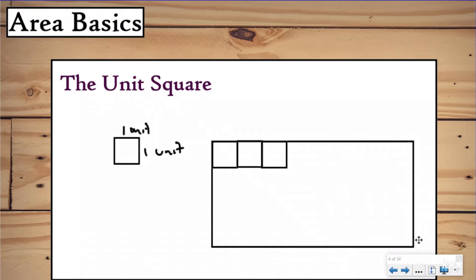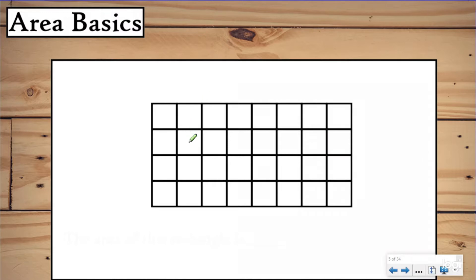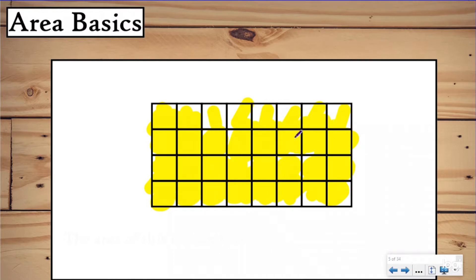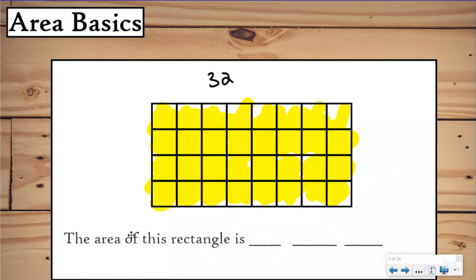Let's fast forward to when I've covered the entire rectangle already. Here we have the same rectangle covered with our unit squares, and we're trying to find the area. We're going to count the unit squares — count them in a line, and shade them in as you count so you don't forget. Counting through all of them, to cover this rectangle completely we needed 32 unit squares. So the area of this rectangle is 32 — but we label it as 32 square units, because we are covering the shape with square units.